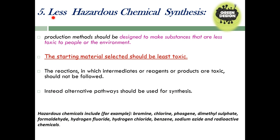Following these principles leads to less hazardous chemical synthesis. Design a synthesis in such a way that every reactant and every process is less hazardous. Your starting materials should be less toxic, and your whole production method should be designed to make substances that are less toxic to people and the environment. If intermediates, reagents, or products are toxic, find alternative pathways.